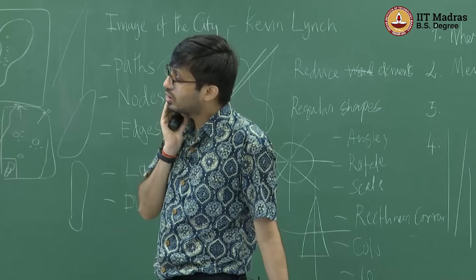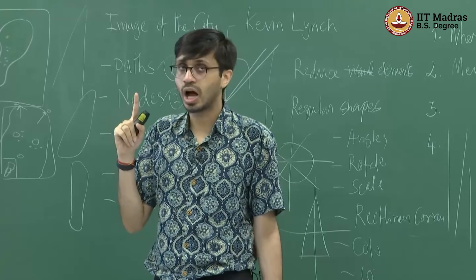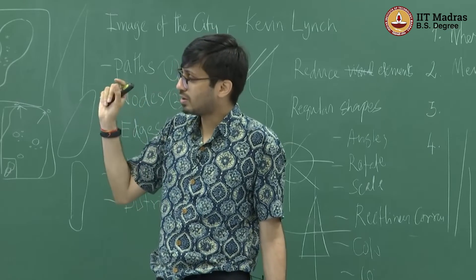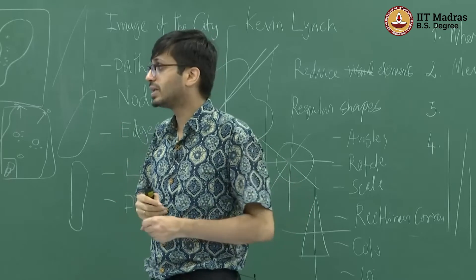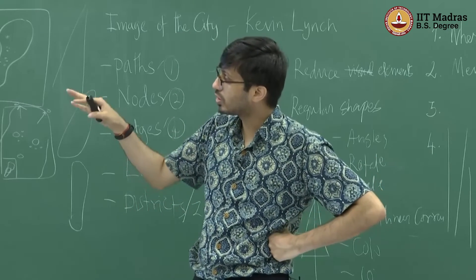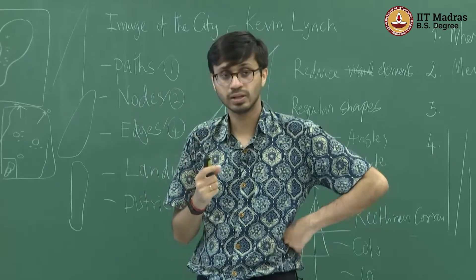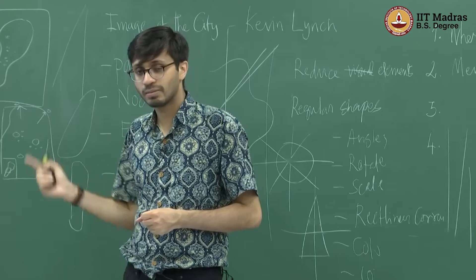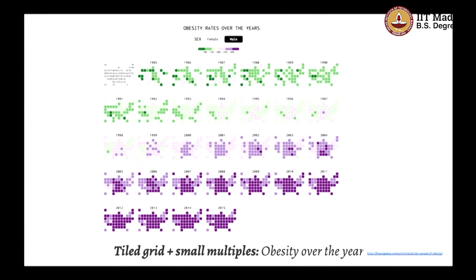There are a few other techniques. For the US, a better approach instead of making a choropleth is to make a square or a hexagon for every state and then color it. These tiled grid maps are another variation of choropleths. Here is the same obesity-in-America map but now shown as small multiples — repeating the same chart while changing one element of data. Every square is one state, shown from 1985 all the way to 2015. The color scale goes from 10% being dark green to above 30% being dark purple, and you can see how over the last two decades obesity rates have really increased in America.